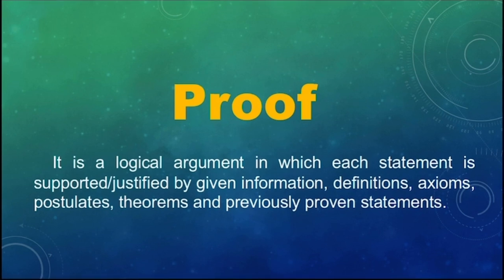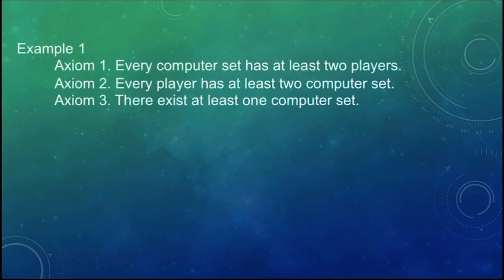Now, let's consider the following examples. For example number 1: Axiom 1: Every computer set has at least 2 players. Axiom 2: Every player has at least 2 computer sets. Axiom 3: There exists at least 1 computer set. This might describe a routine for a shop owner to control activity in a computer shop, but it is also a set of axioms. We have 2 undefined terms: the computer set and the player. We have not defined computer set or player, but we can build on those undefined terms to construct various proofs.